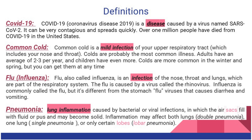COVID-19 is a disease caused by a virus called SARS. It can be contagious and spread very quickly. Over 1 million people have died from COVID-19 in the United States. The common cold is a mild infection of the upper respiratory tract, which includes your nose, your mouth, your throat. Colds are the most common of illnesses. Adults usually get two to three colds per year — children more often. Colds are more common in the winter and spring, but you can get them any time of the year.